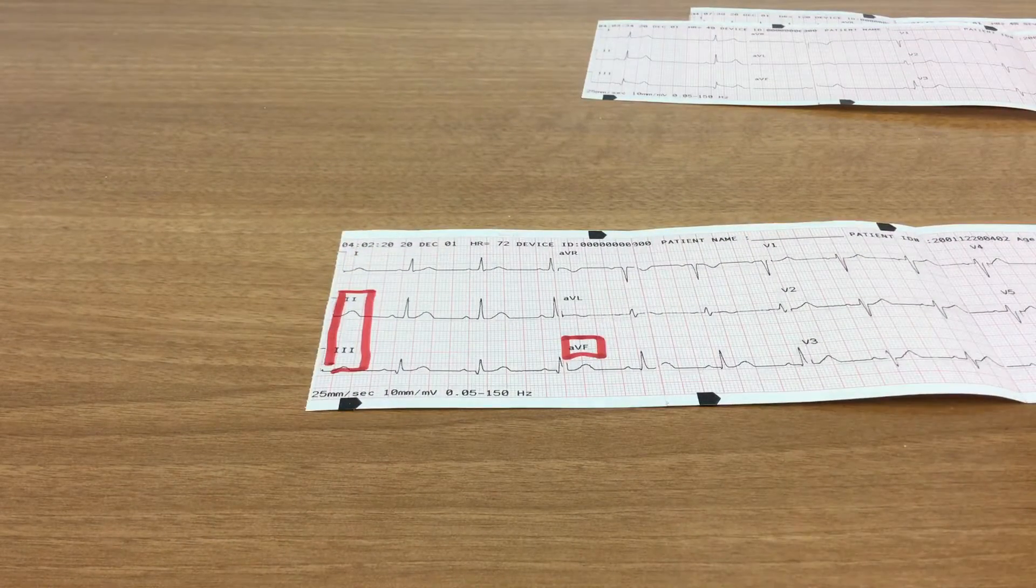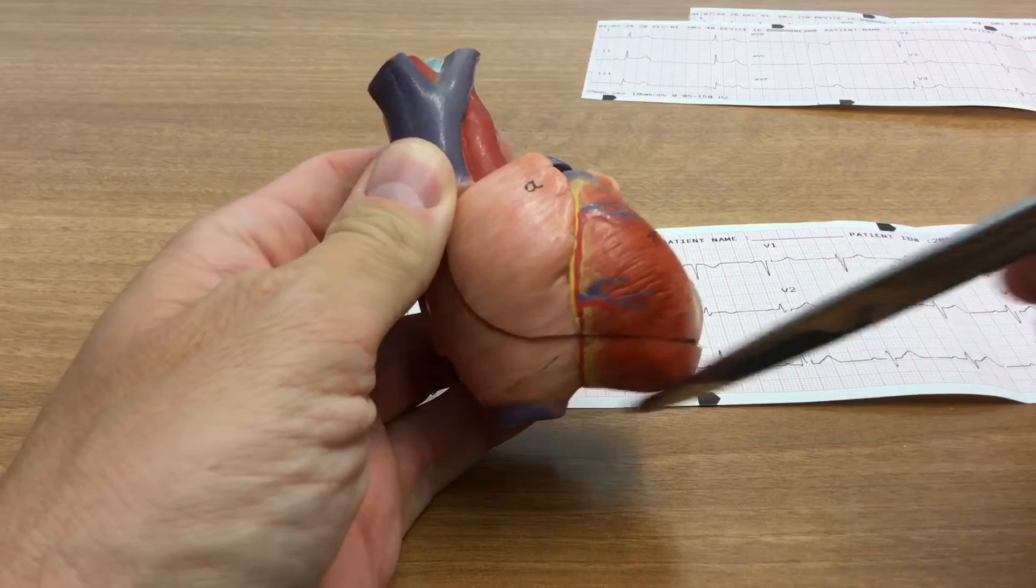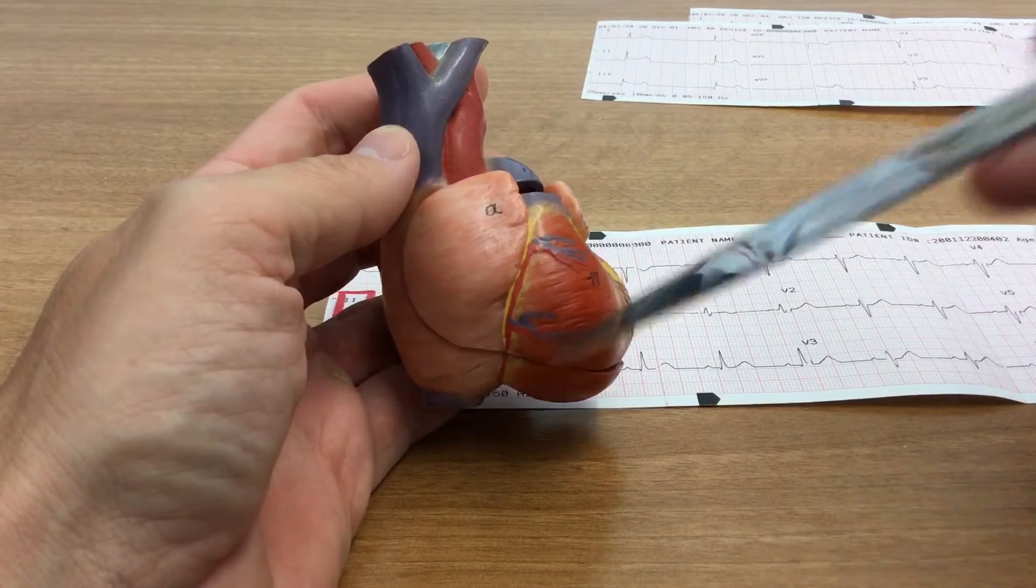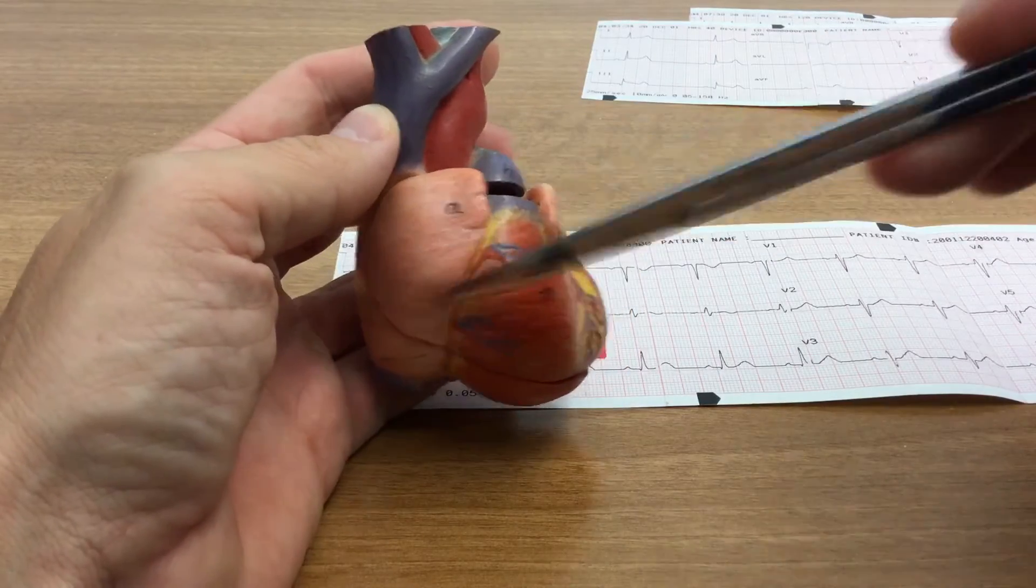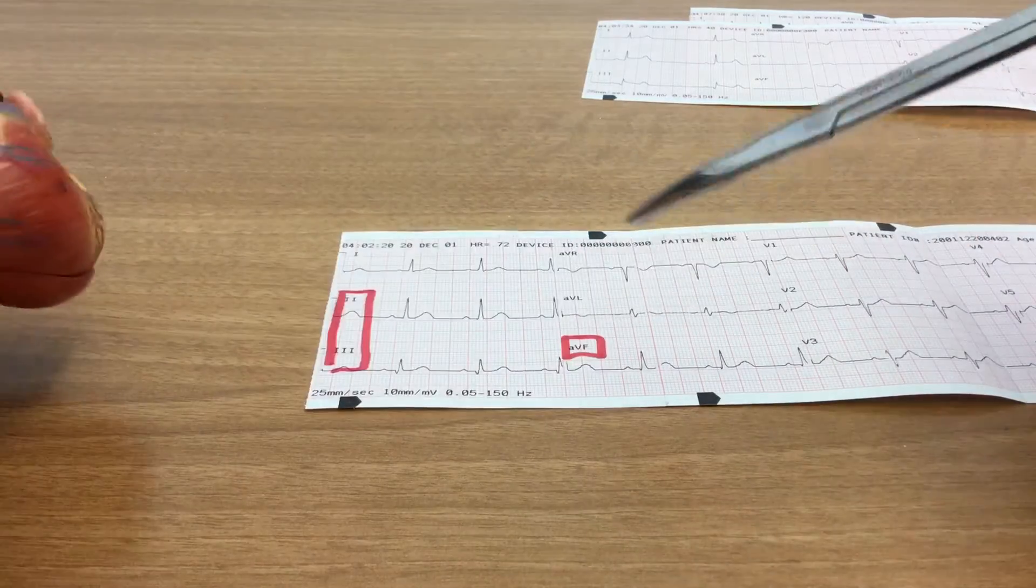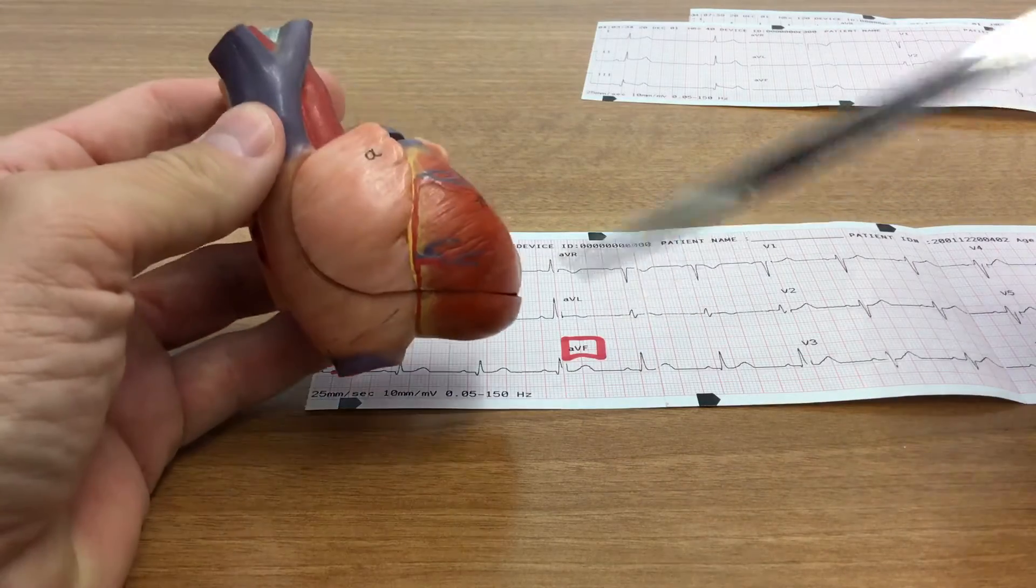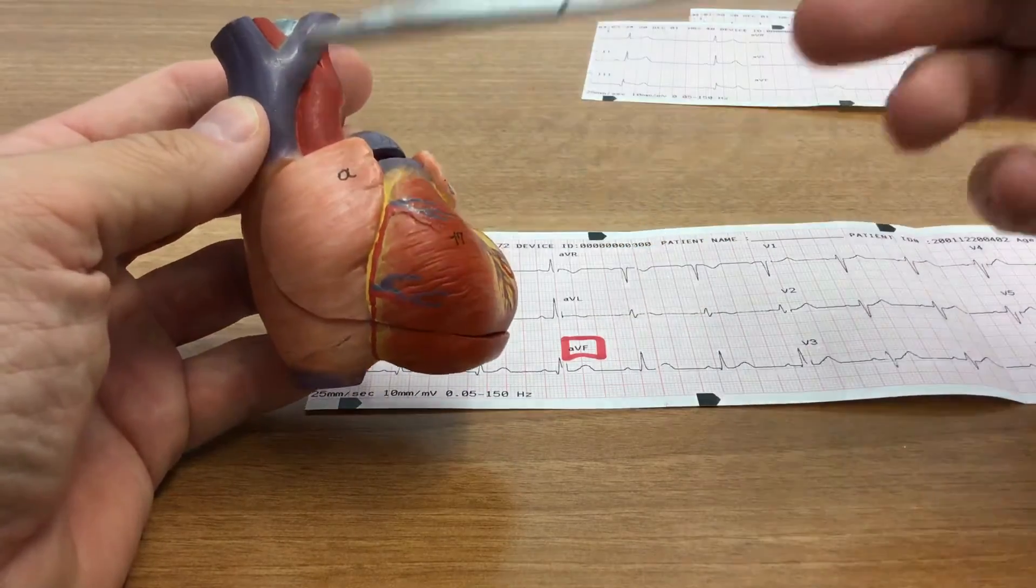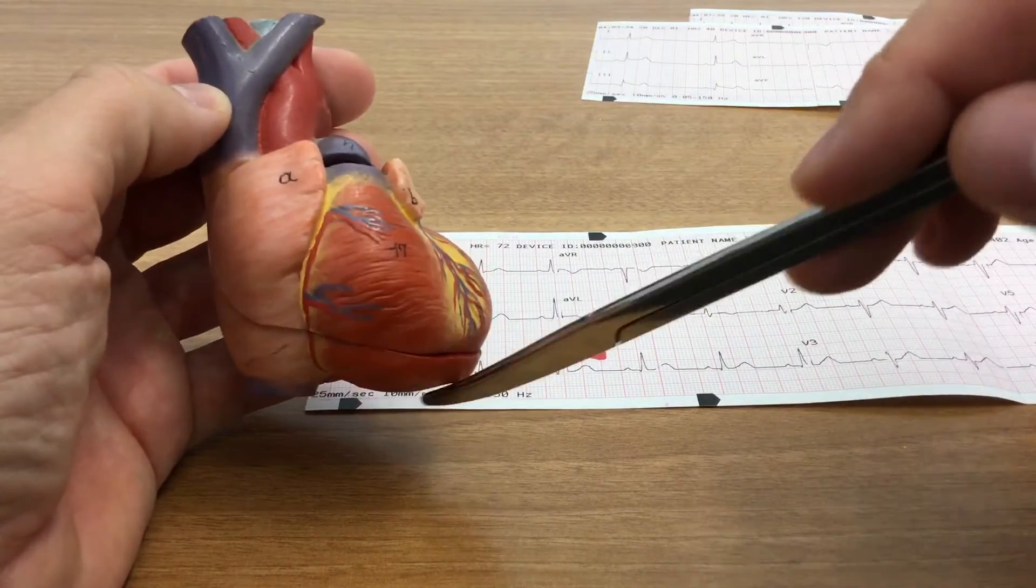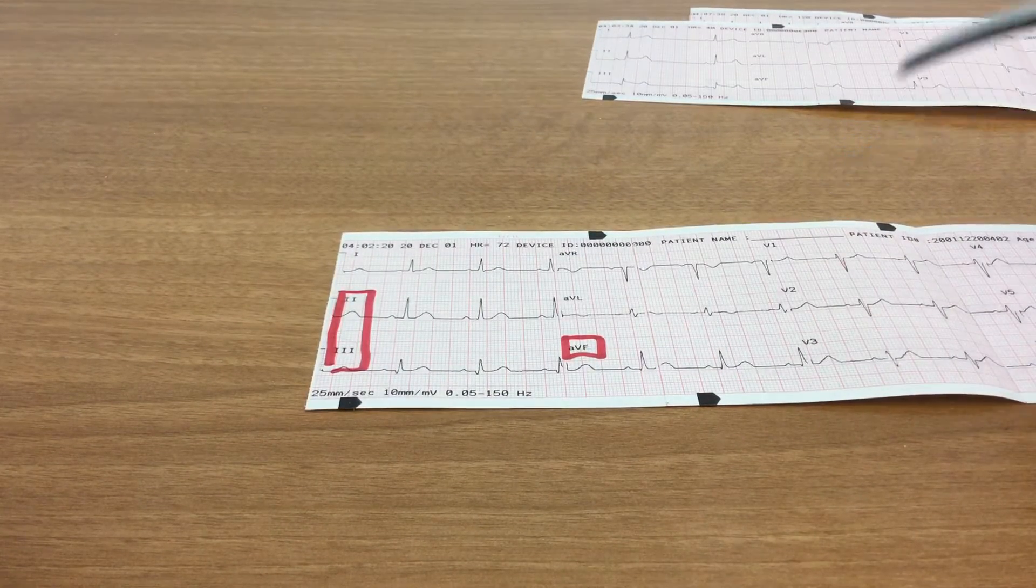So 2, 3, and AVF look primarily at the inferior wall of the left ventricle. And of course, that would also include the right ventricle to some extent, and the right atrium, right? So this whole area of the heart here is supplied by the right coronary artery. And it is this set of leads here, 2, 3, and AVF, that looks at this specific area of the heart, the SA node, the right atrium, the right ventricle, and the inferior wall of the left ventricle. So hopefully that makes sense. So far, so good.